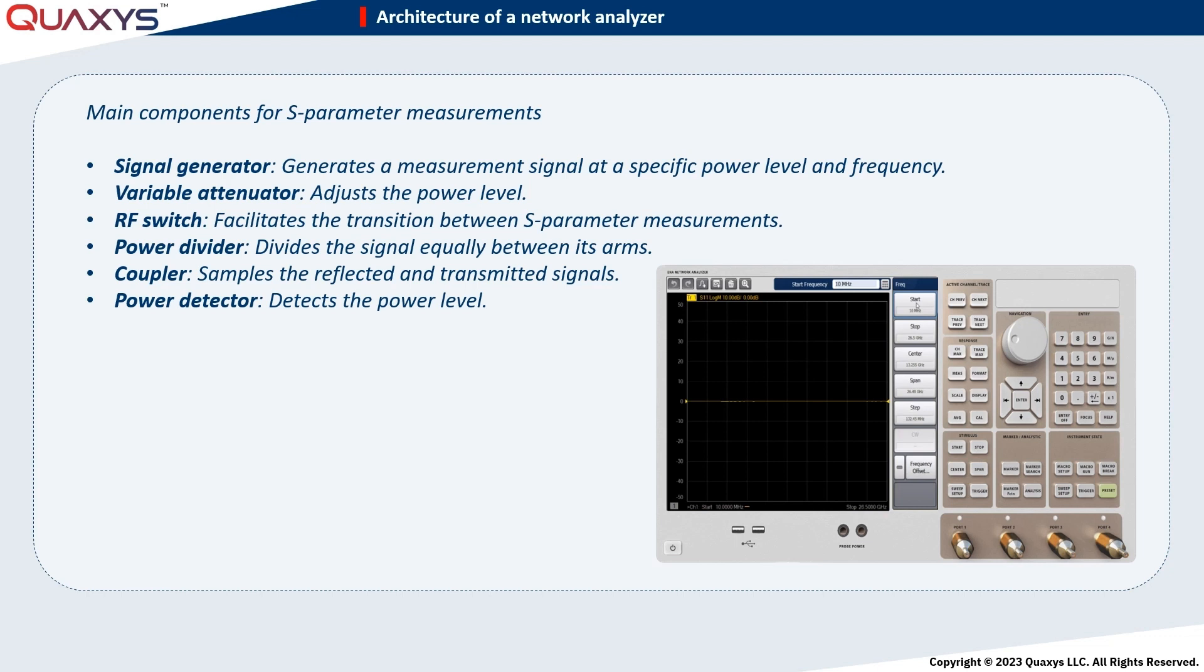The power divider splits the incident power and routes it to a power detector to measure the incident power's level. Finally, couplers are used for sampling the reflected and transmitted signals.